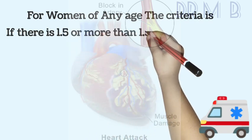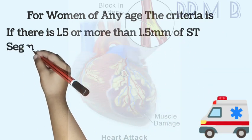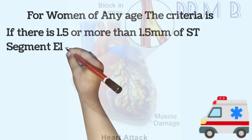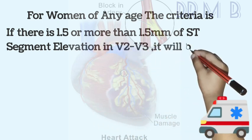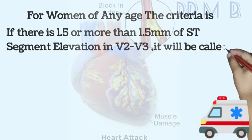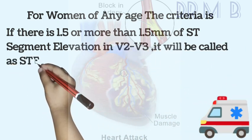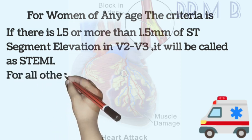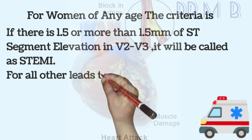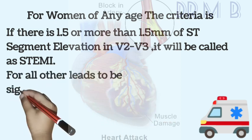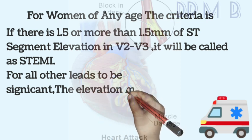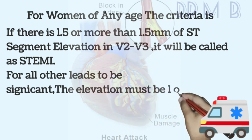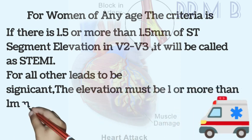If there is 1.5mm or more than 1.5mm of ST segment elevation in V2 to V3, it will be called as ST elevation MI. For all other leads to be significant, the elevation must be 1mm or more than 1mm.